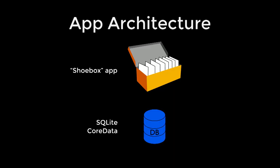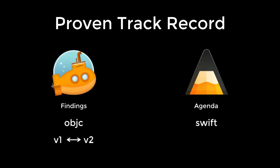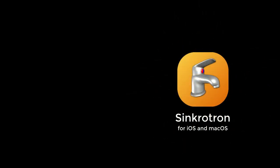I'm going to talk about app architecture, particularly applied to maybe more of a shoebox app, where you have a bunch of documents that the user is viewing and you have a database — typically SQLite or Core Data. This architecture has a proven track record; I've used it for a long time in Findings for several years. It even went from version 1 to version 2 without making any changes, and it's being used in Agenda now.